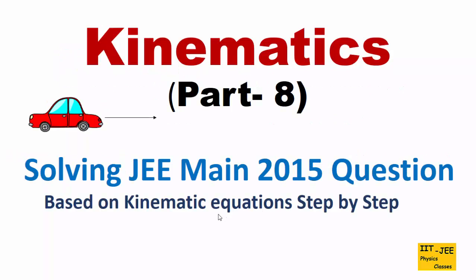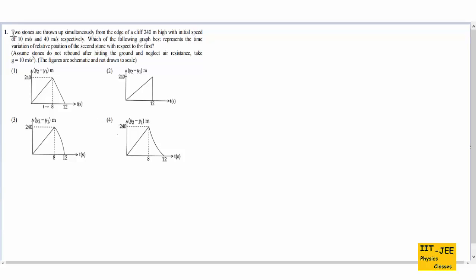Hello friends. In this video we will discuss a JEE Main 2015 question based on kinematic equations. The question says: two stones are thrown up simultaneously from the edge of a cliff 240 meters high with initial speeds of 10 meters per second and 40 meters per second respectively. Which of the following graphs best represents the time variation of relative position of the second stone with respect to the first stone?